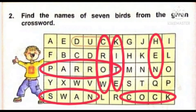Toh dhundhne ka ek tarika kya hai? Sabse pahle aap sabhi rows mein search kariye, aur phir sabhi columns mein search kariye. Ek baar top se bottom, upar se neeche. Aur ek baar left se right ki taraf search kariye. So you all can see, I have already encircled the names of birds here. Sare birds ke naam par circle laga hua hai.